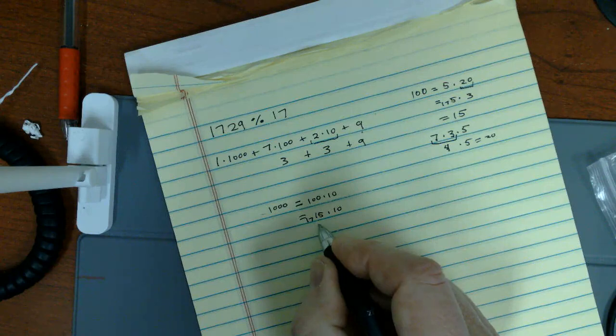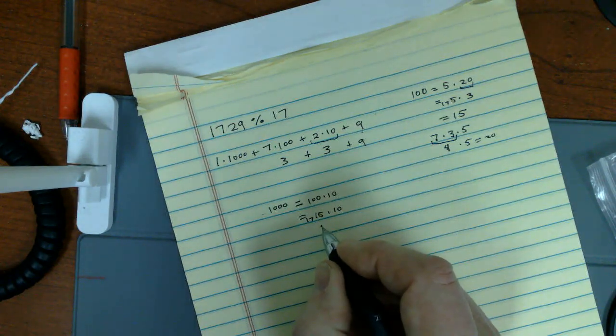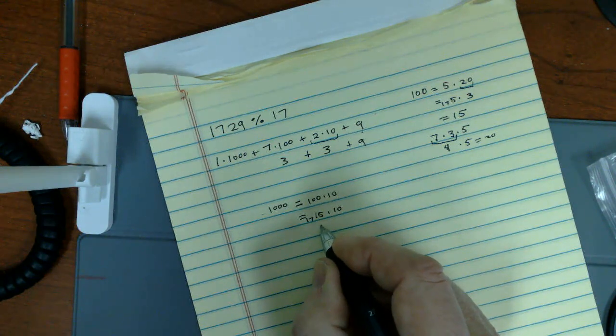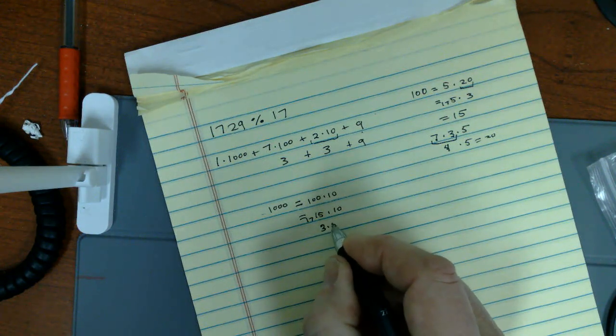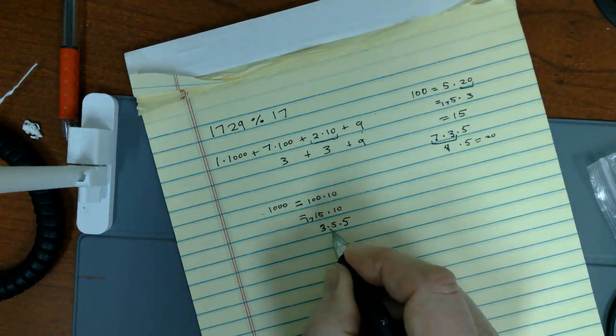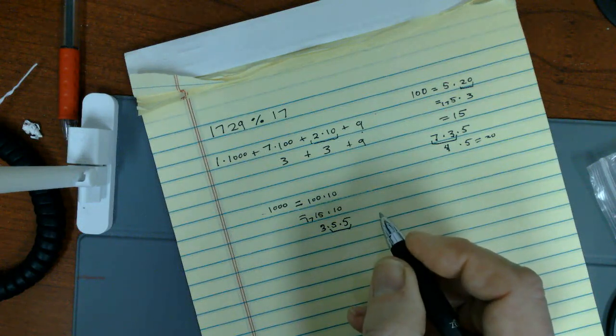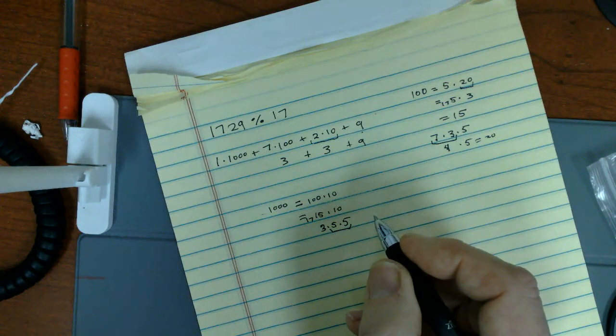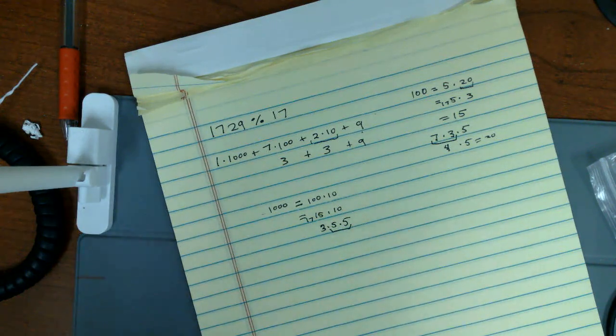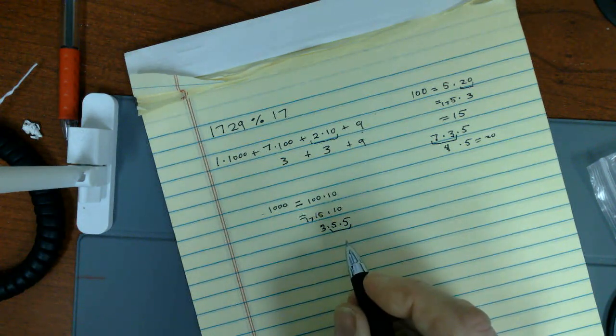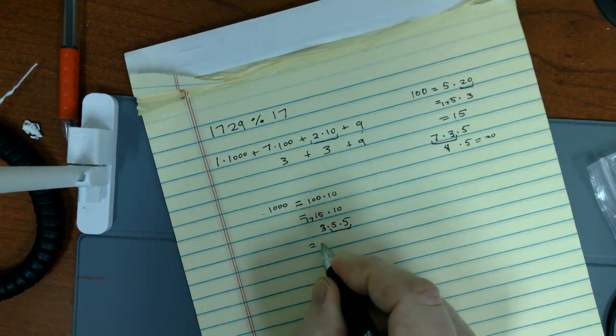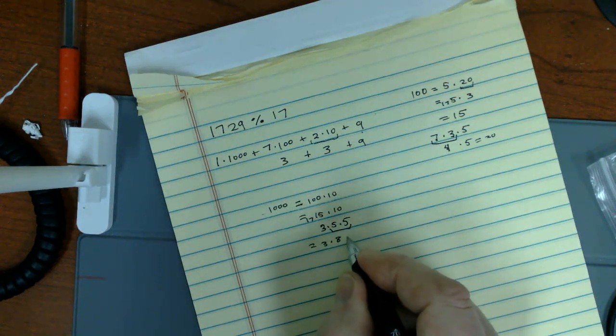15 times 10 is, let's see, 3 times 5 times 5. 5 times 5 is 25. 25 mod 17 is 3 plus 5, which is 8. So this is 3 times 8, which is 24.